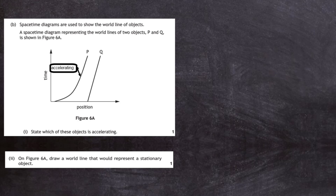Question 6b part 2: on figure 6a, draw a world line that would represent a stationary object. A stationary object means its position does not change through time. If the object's position is fixed, as time progresses you get a straight line all the way up the time axis — that is the world line of an object which is staying still, which is stationary.